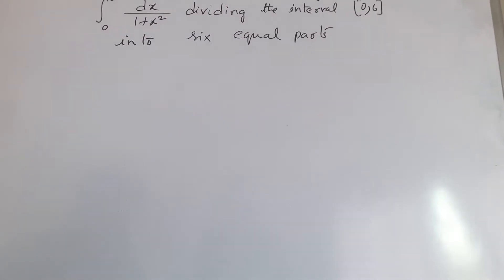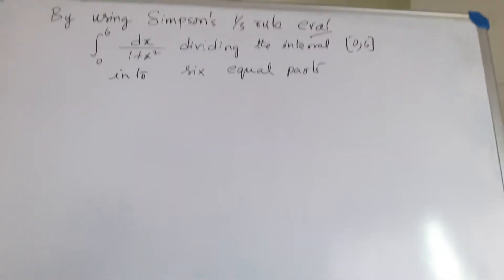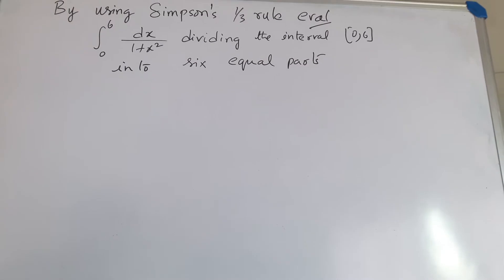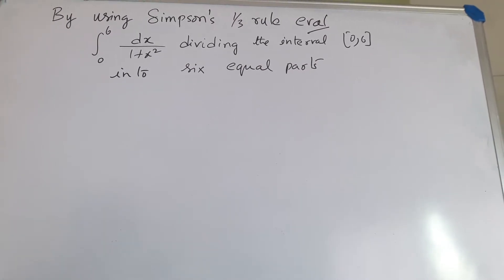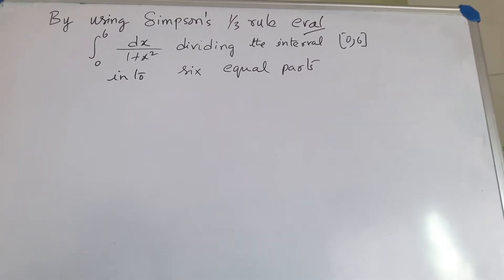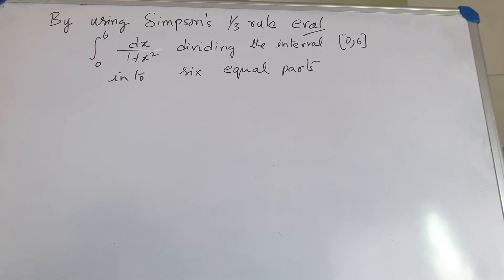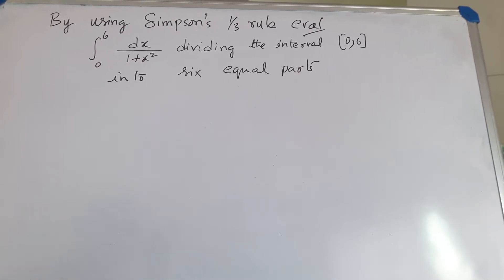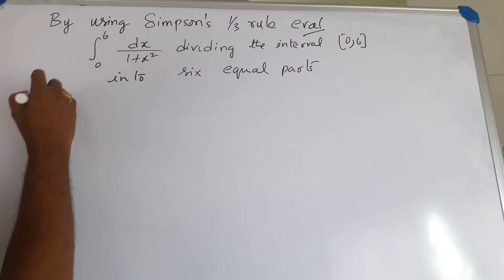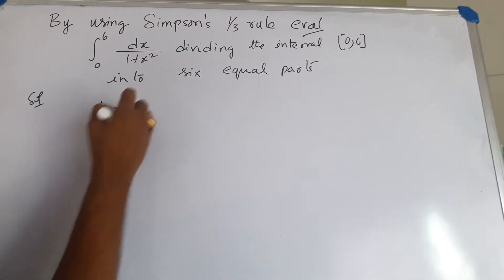Instance one: using Simpson's 1/3 rule, evaluate the integral from 0 to 6 of dx divided by 1 plus x squared, dividing the interval which is 0 to 6 into 6 equal parts. The solution corresponds to h being 1.